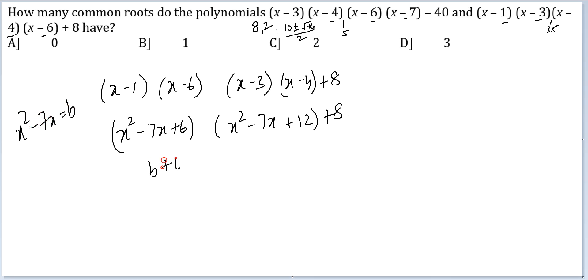So I get (b + 6)(b + 12). So this will open up into b square plus 18b plus 80 is equal to 0. Now 80 has to be broken down into two numbers. So I get (b + 10) into (b + 8). I get x square minus 7x plus 10 on one side, and x square minus 7x plus 8 on the other.